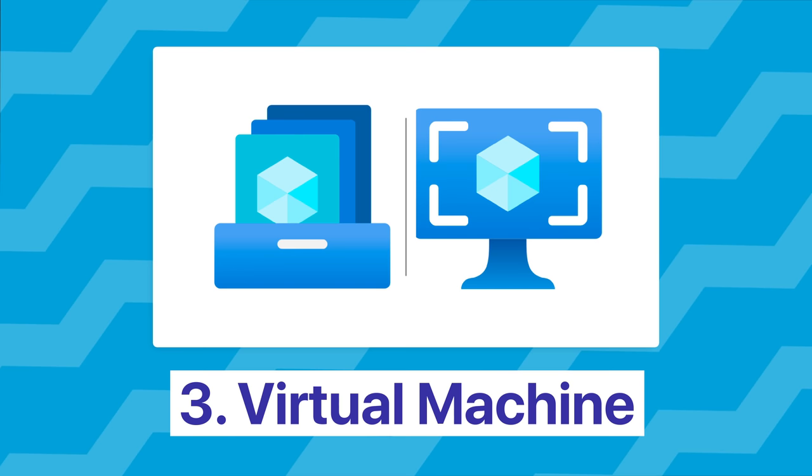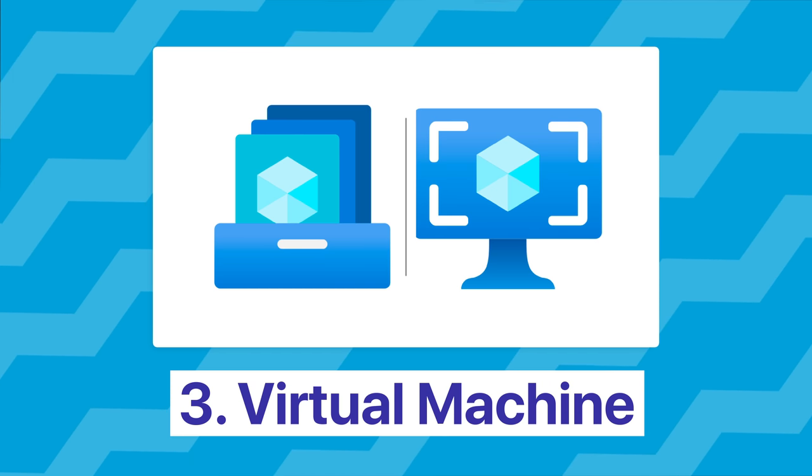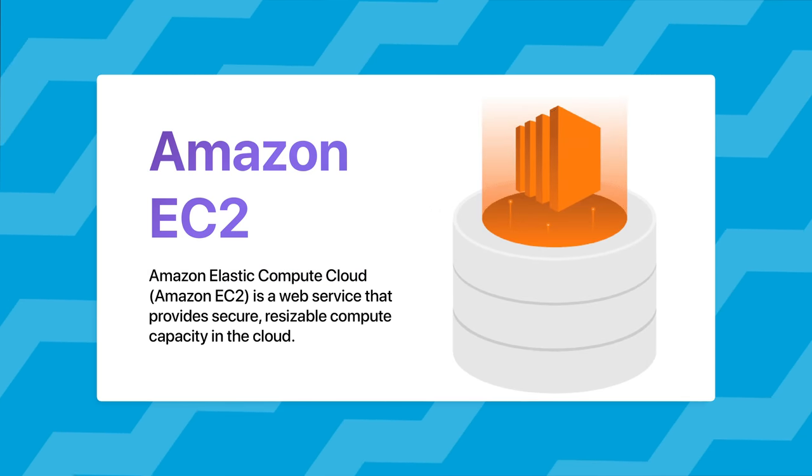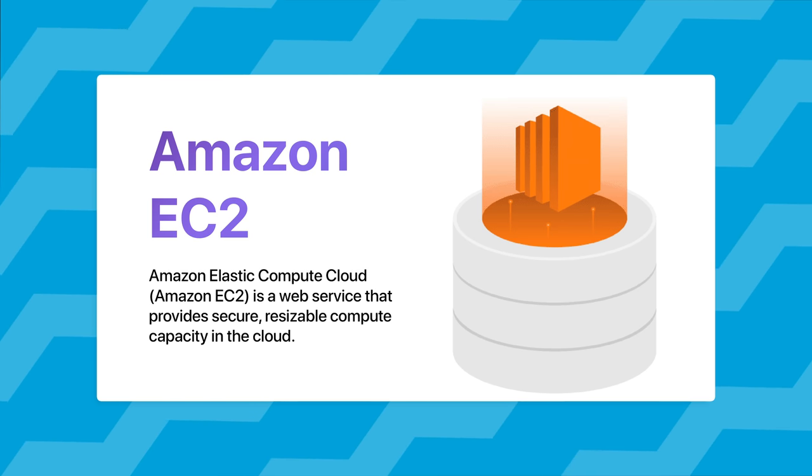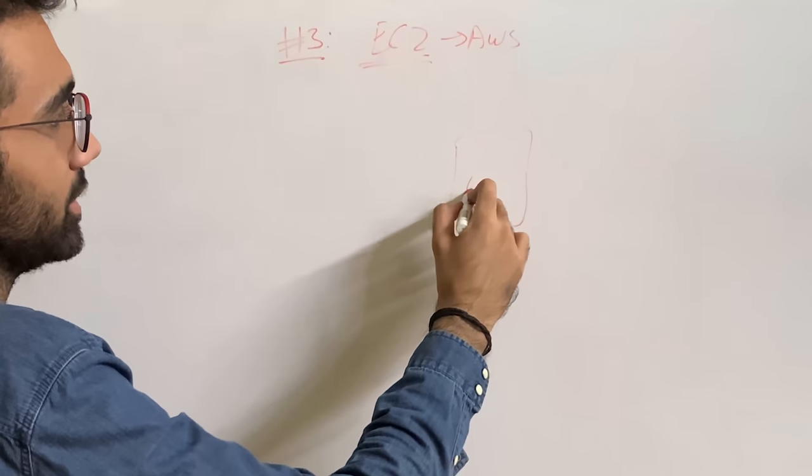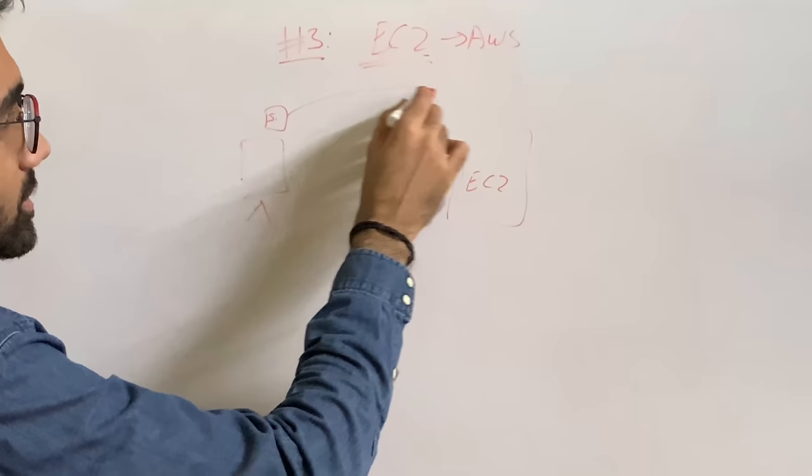The third way to host your API online is using a virtual computer or virtual machine itself. So EC2, for example, from AWS is a full blown computer which you can SSH into and would be running 24/7.